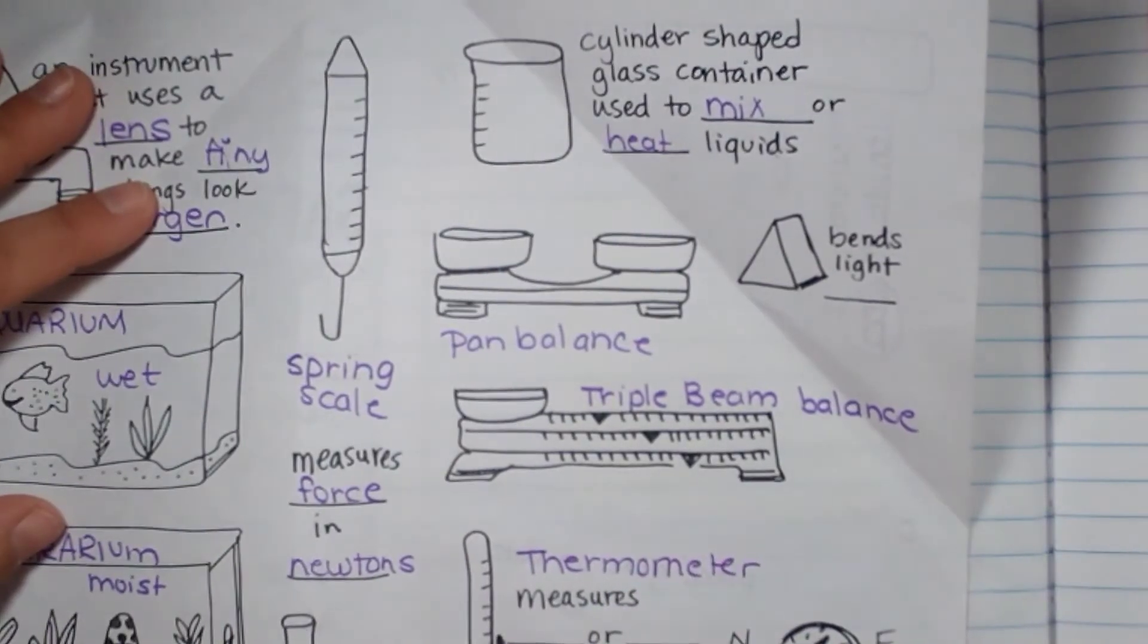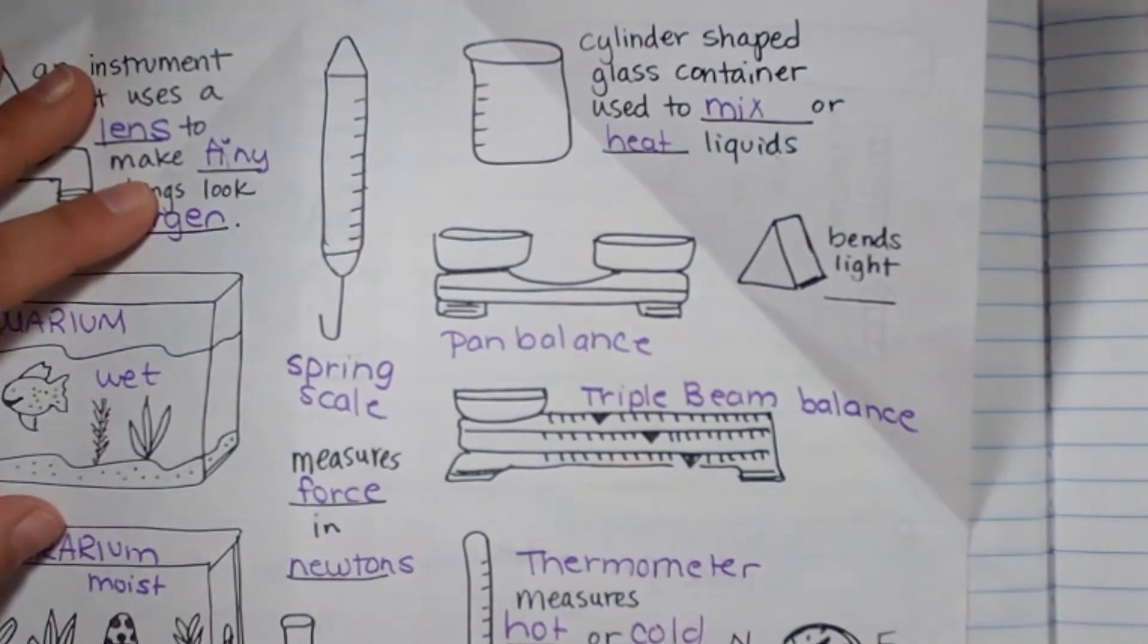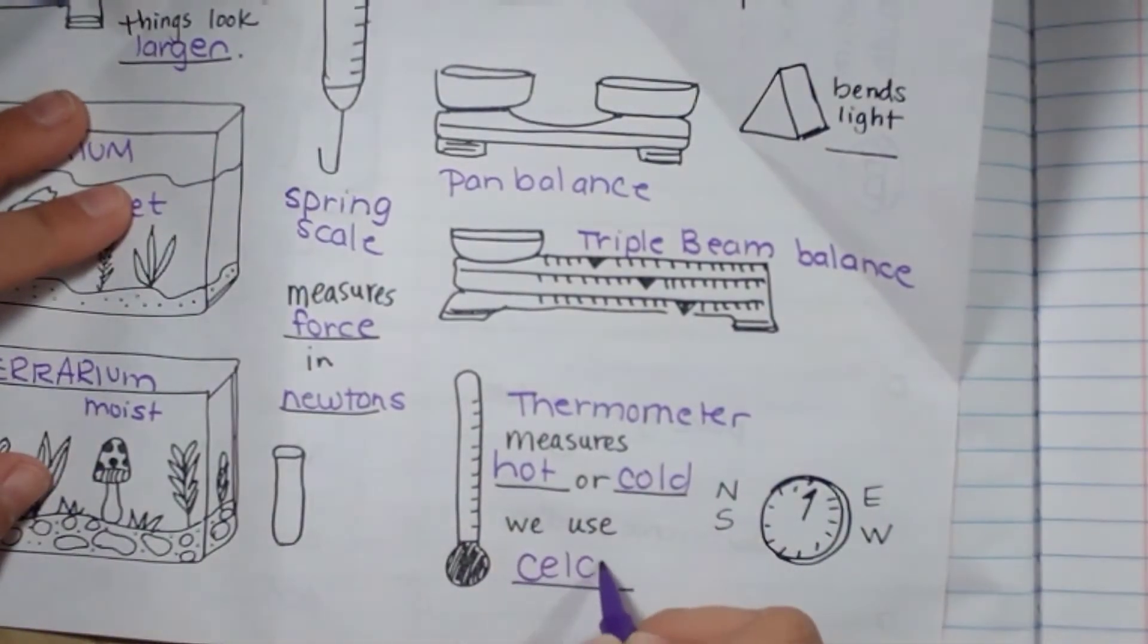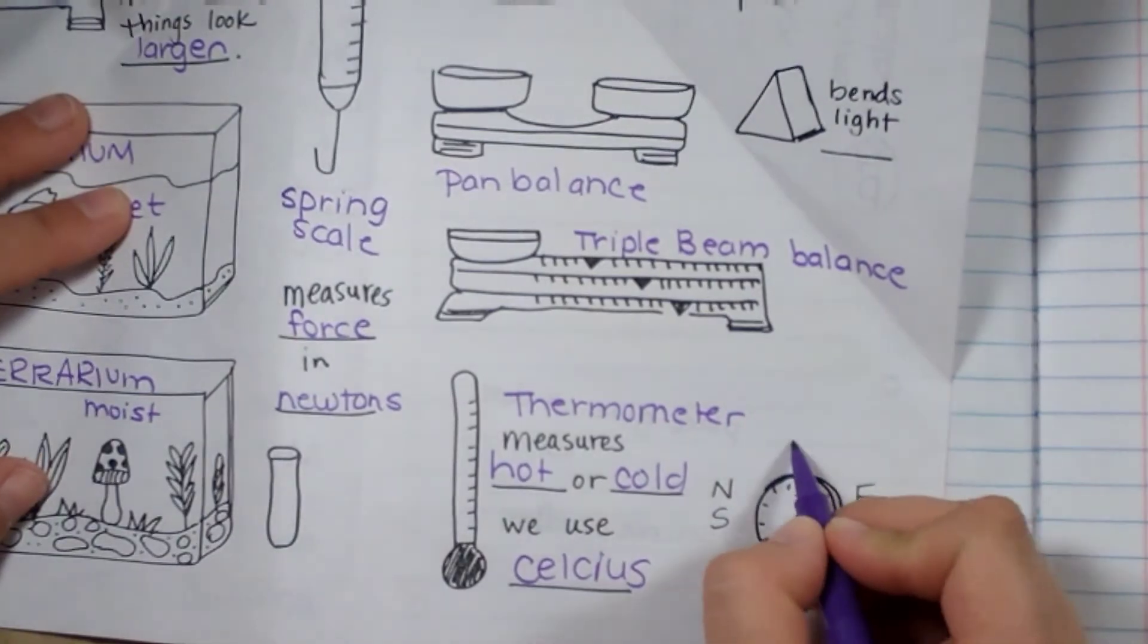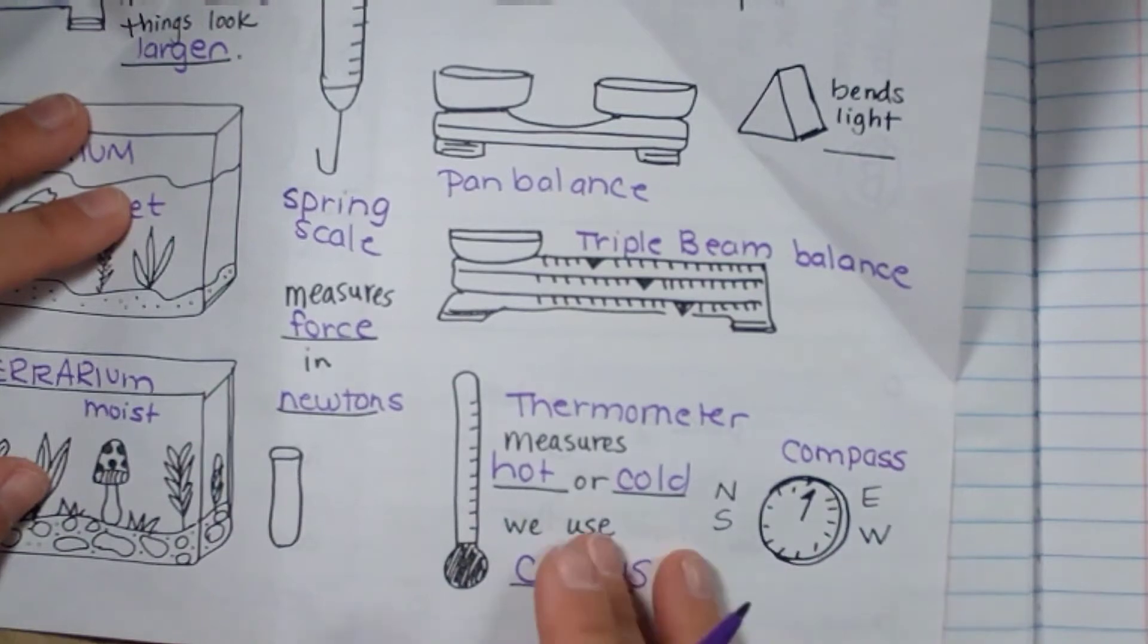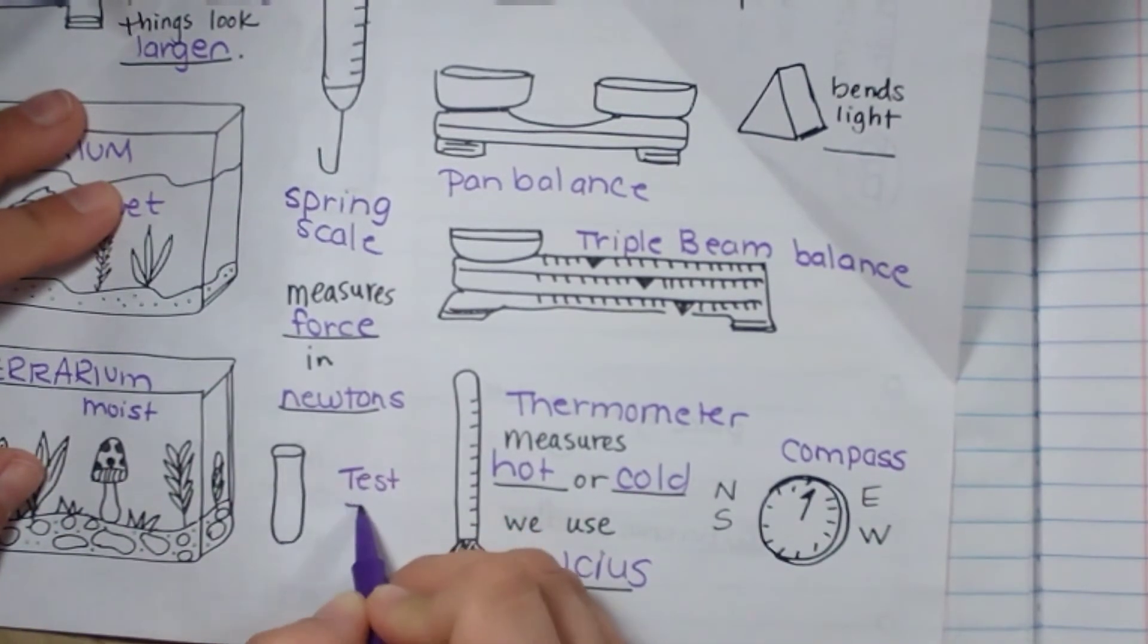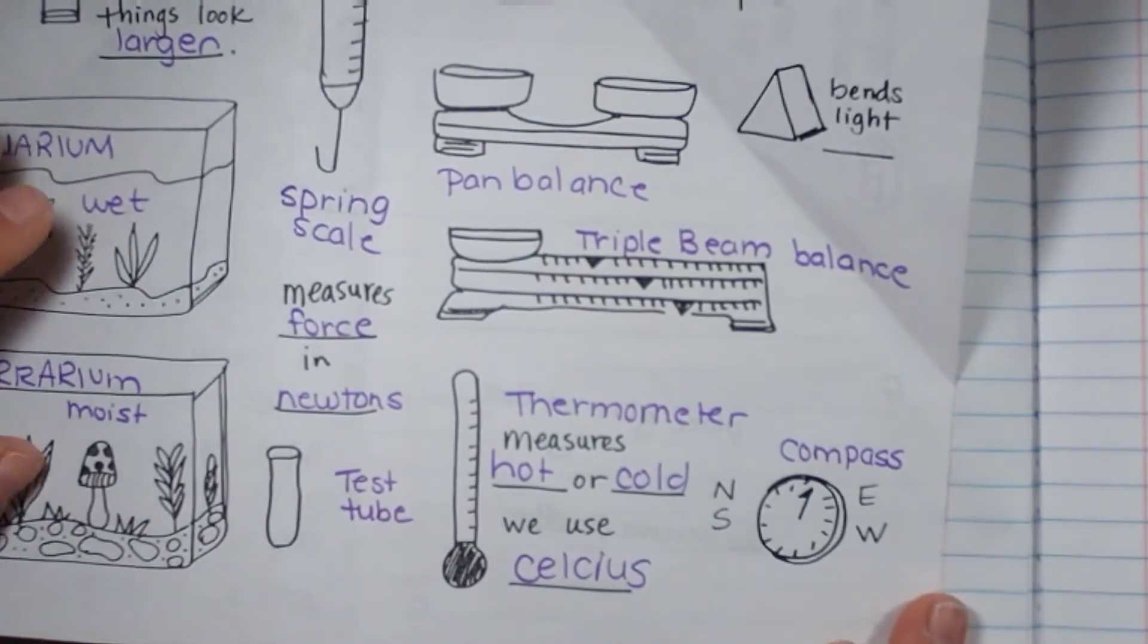Thermometer measures hot or cold, and we do not use Fahrenheit. We use Celsius in science. We have a compass that measures direction: north, south, east, and west. And this is a test tube. Something that you would put something that you're testing into, and it's made out of glass. Some are made out of plastic.